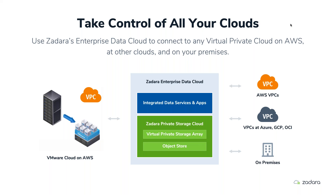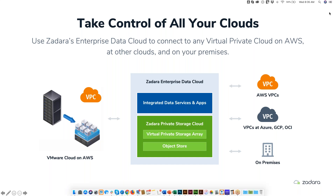We understood these constraints when VMware Cloud on AWS first came out — we're partners with VMware — and we came up with a solution that makes things simpler. We give you the same on-premises capabilities whether you're on-premises or in public clouds, combined with not just basic storage services but additional services that make operations much more streamlined. We wrap it up and operate the storage environment for you — that's the 'as a service' part.